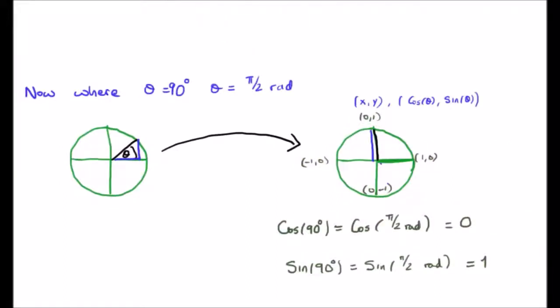In a similar fashion, we look at what happens when theta equals 90 degrees. We bring the point on the circle up to 90 degrees, where x equals 0 and y equals 1. This means cos theta equals 0, so the cosine of 90 degrees — or π/2 radians — is 0. And the sine of 90 degrees, or π/2 radians, is equal to 1. So: cos(0°)=1, sin(0°)=0, cos(90°)=0, and sin(90°)=1.